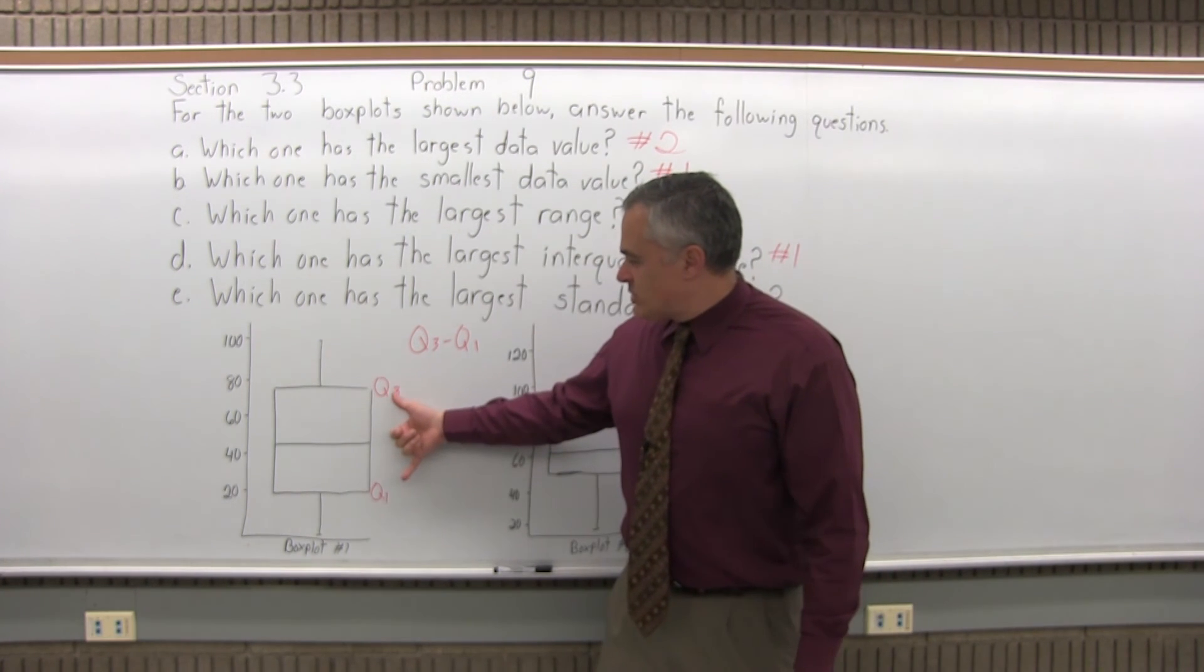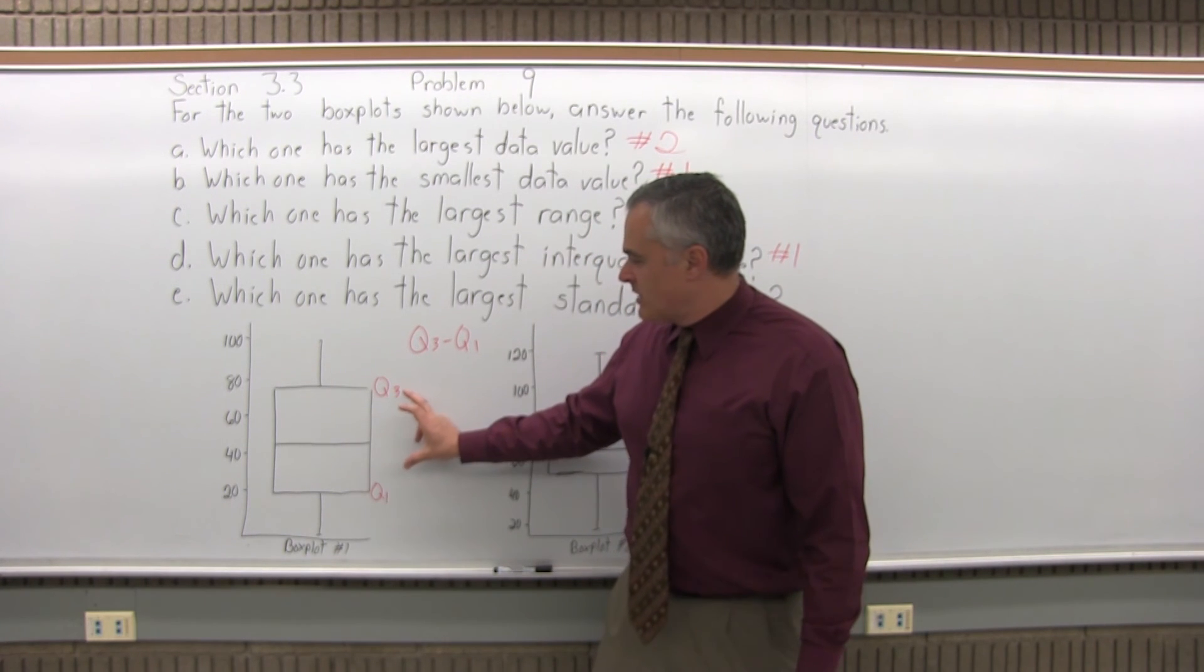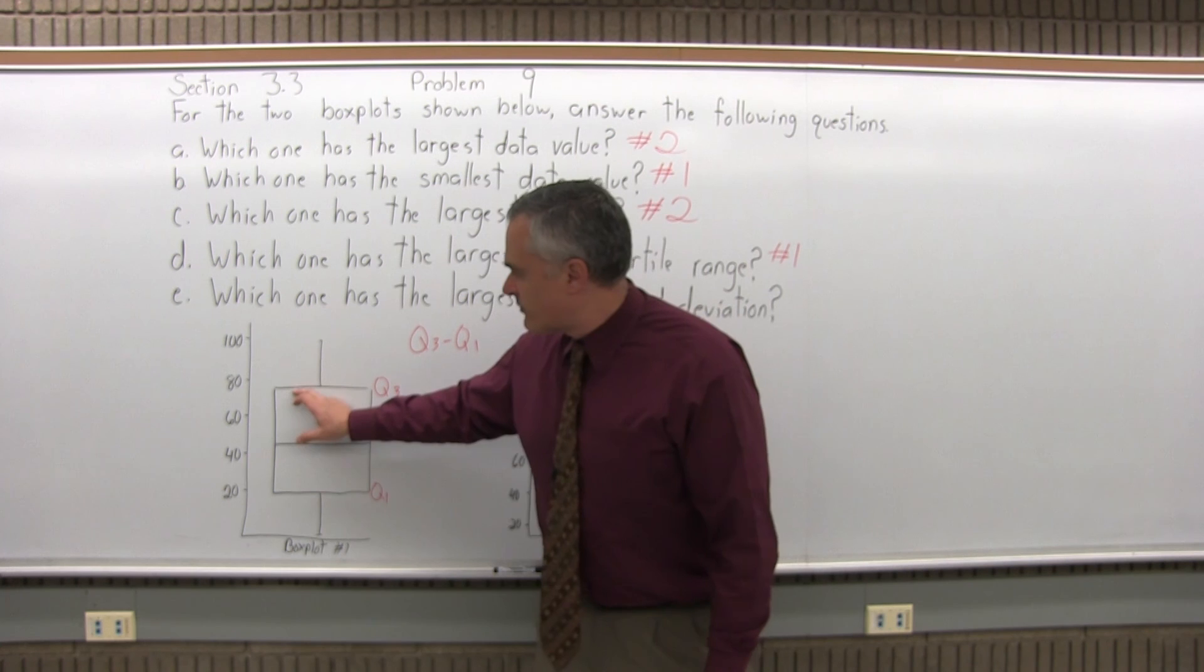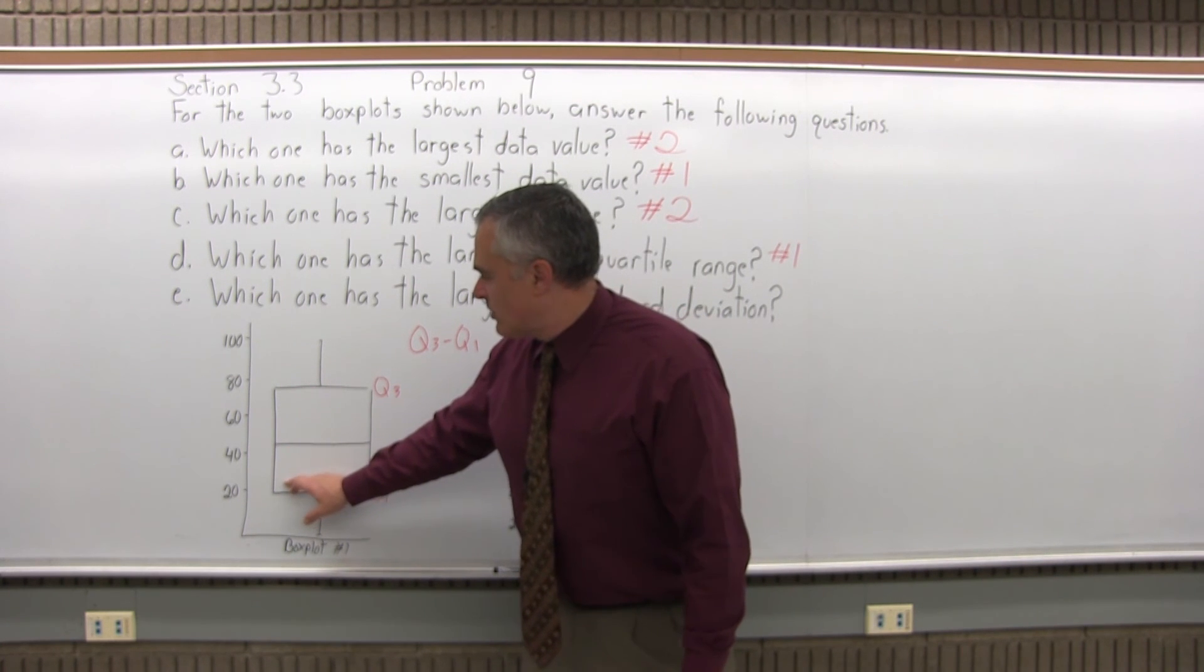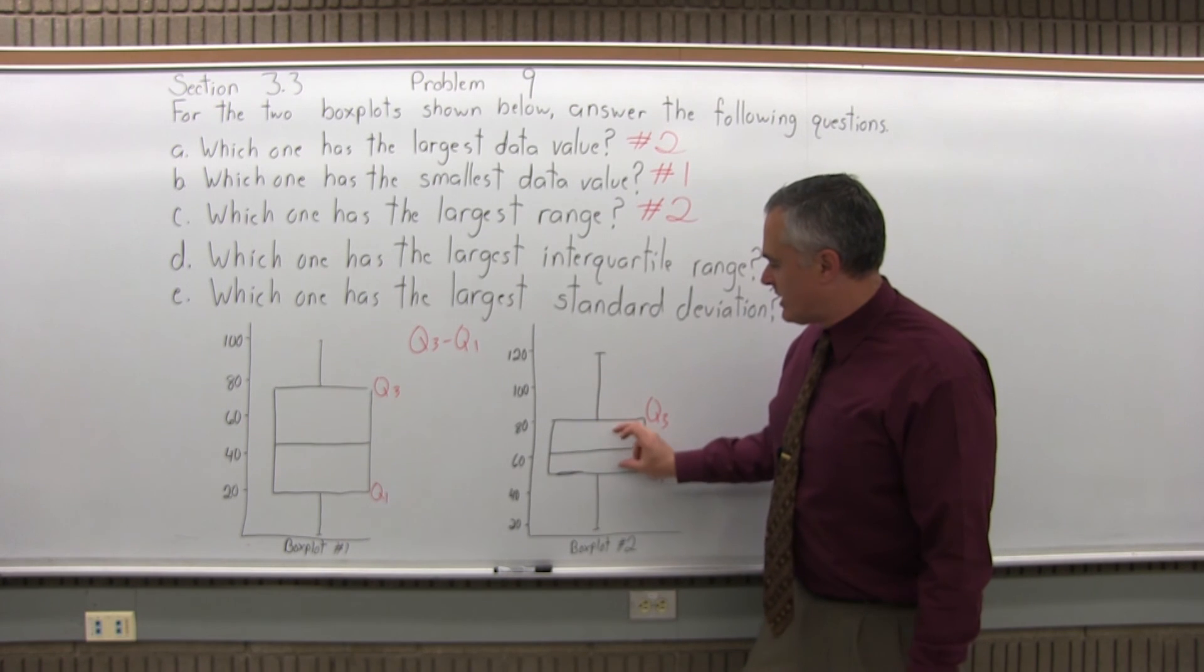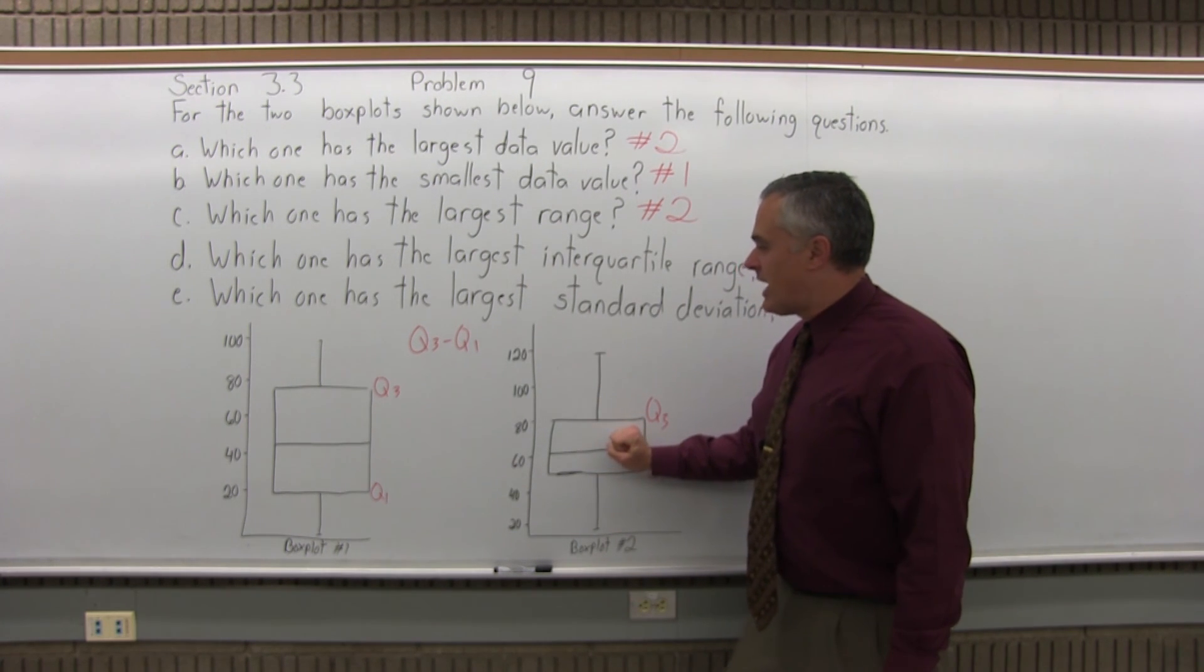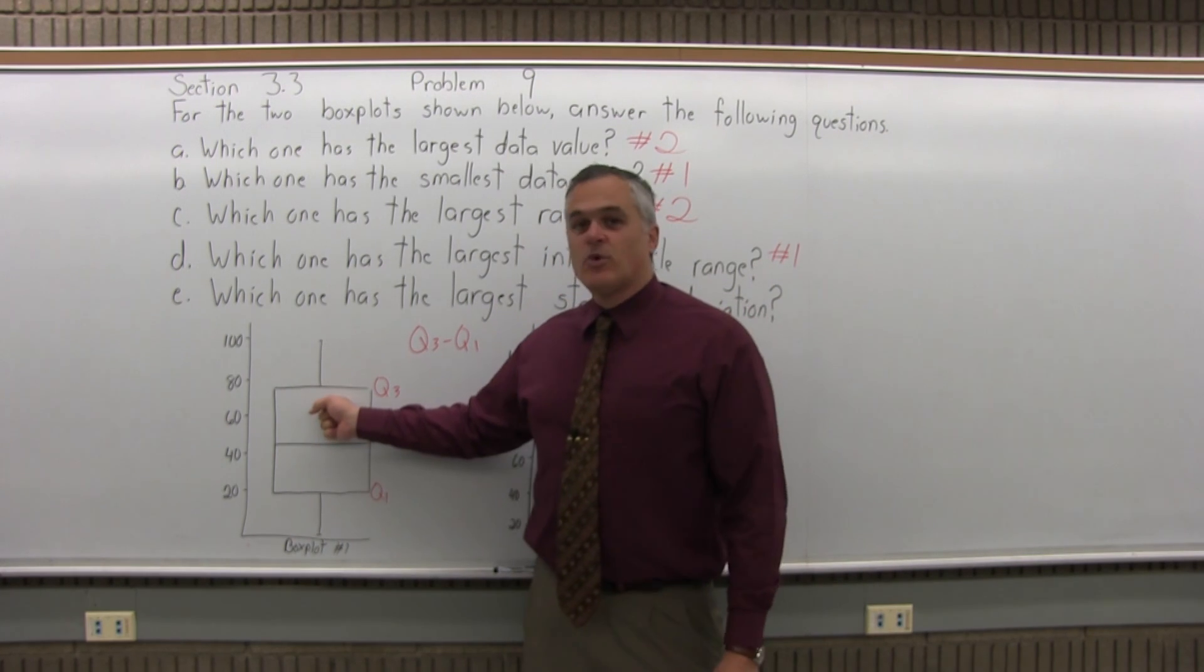Where the majority of the values occur in a bigger range, like that middle chunk going from 80 to 20, a 60 range. Where this one, most of the data values are crammed into a tighter spot. It would seem box plot number one has a bigger spread in its data and therefore a bigger standard deviation.